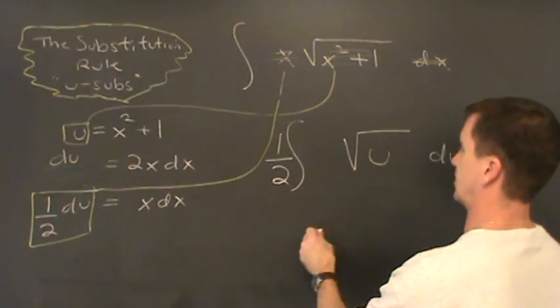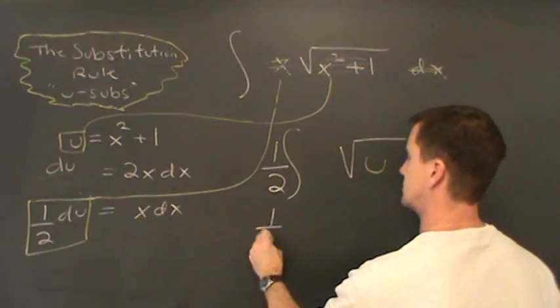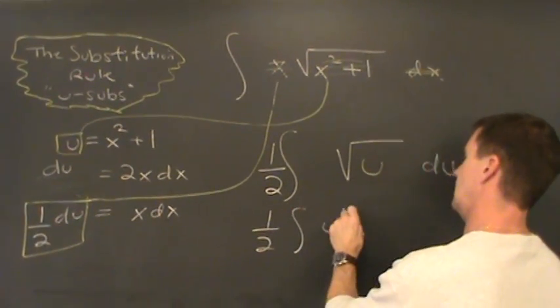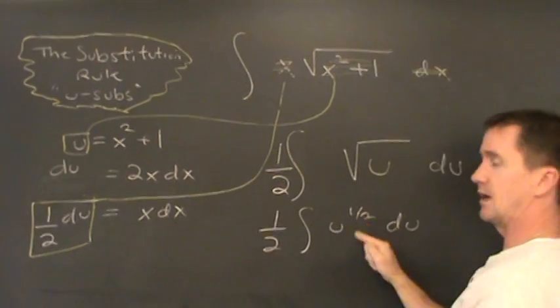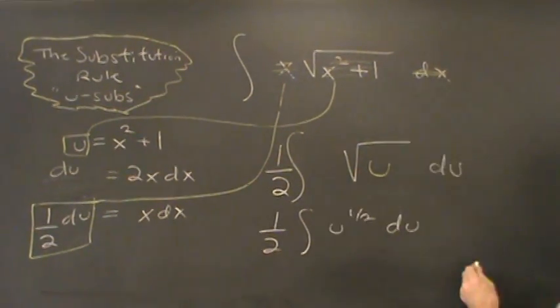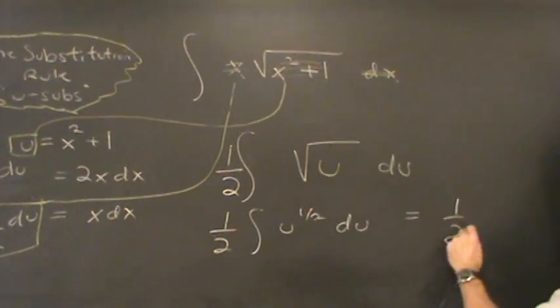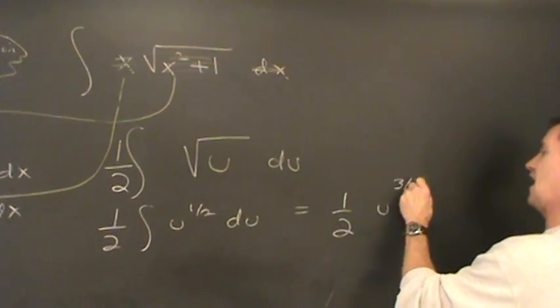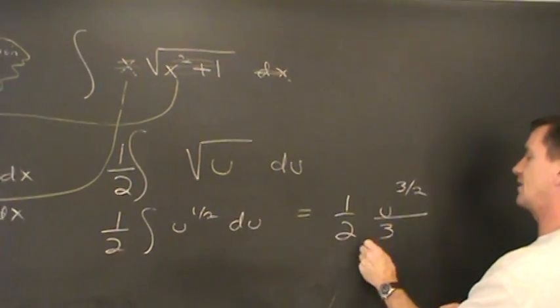So to integrate this, notice everyone that's just u to the one half power. This integral's not too bad. Now I'm just going to increase that by one integer, and I get u to the three halves. So I have one half times u to the three halves divided by three halves.